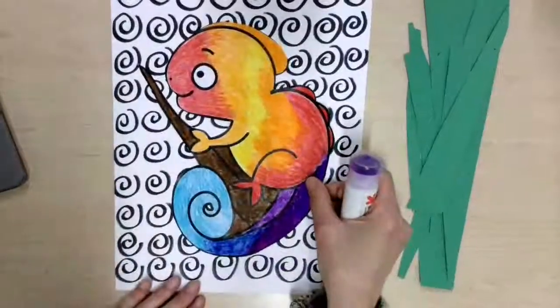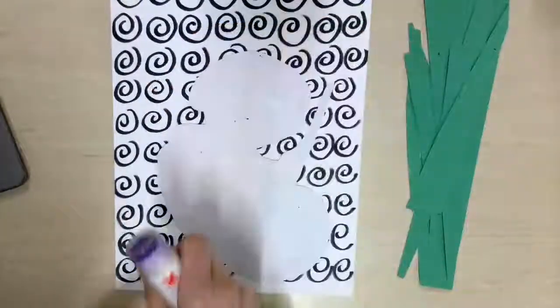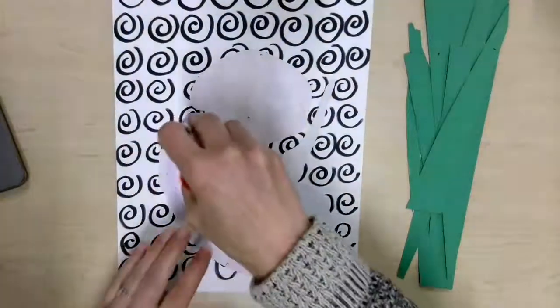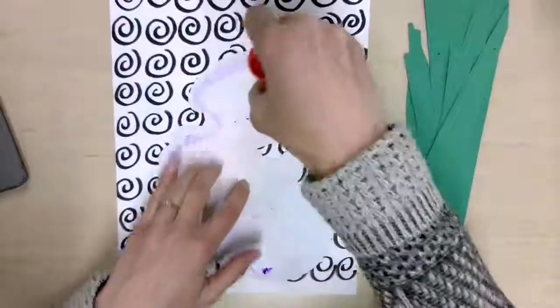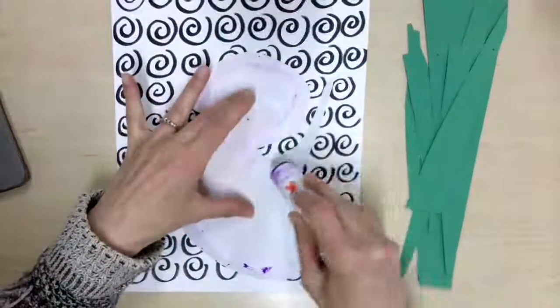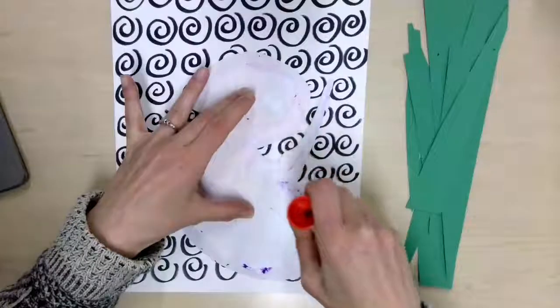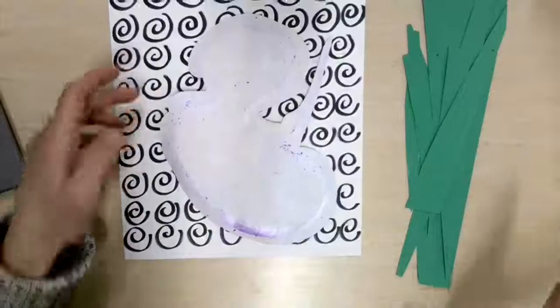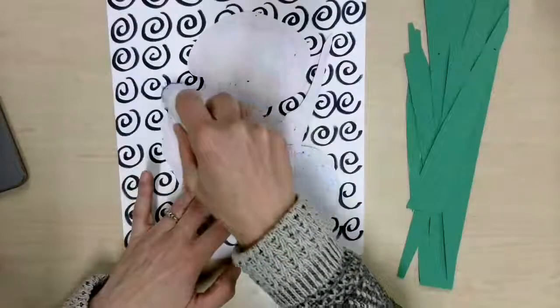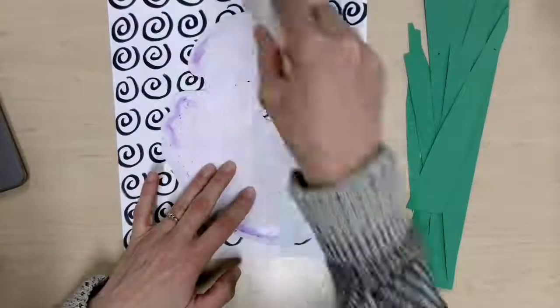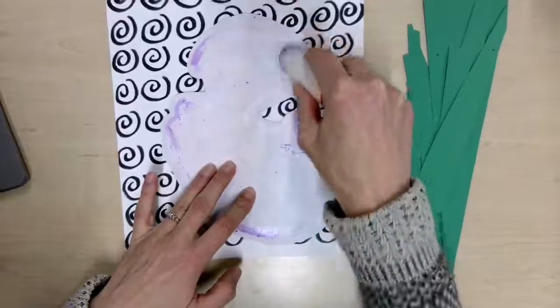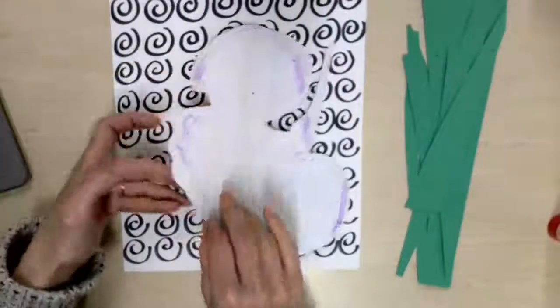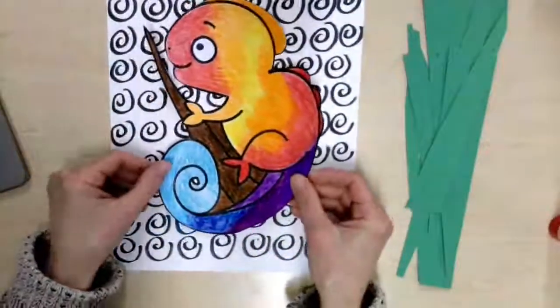to do is glue our chameleon into the center of our background page. We're going to add glue around the edge of our shape with our glue stick, and we want to get it close to the edge because that'll enable our pieces not to curl up on us. You're going to center it and look at your space